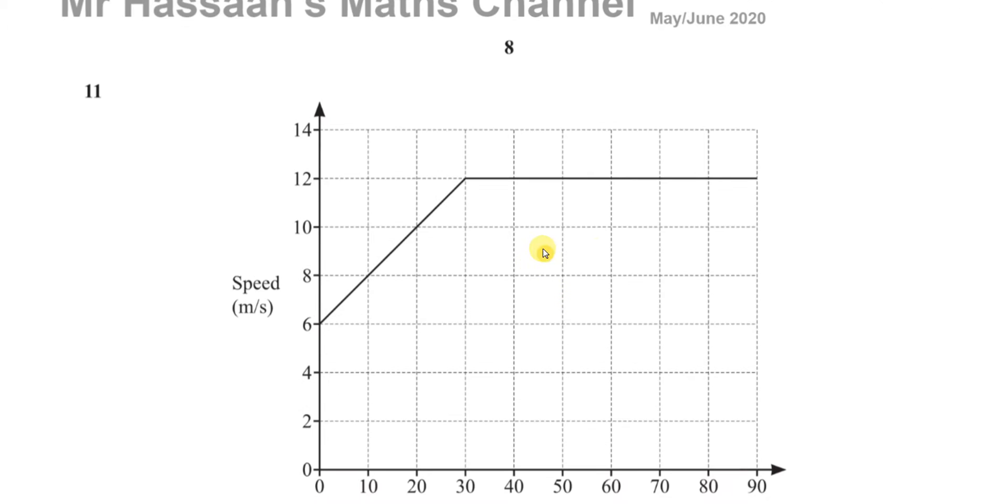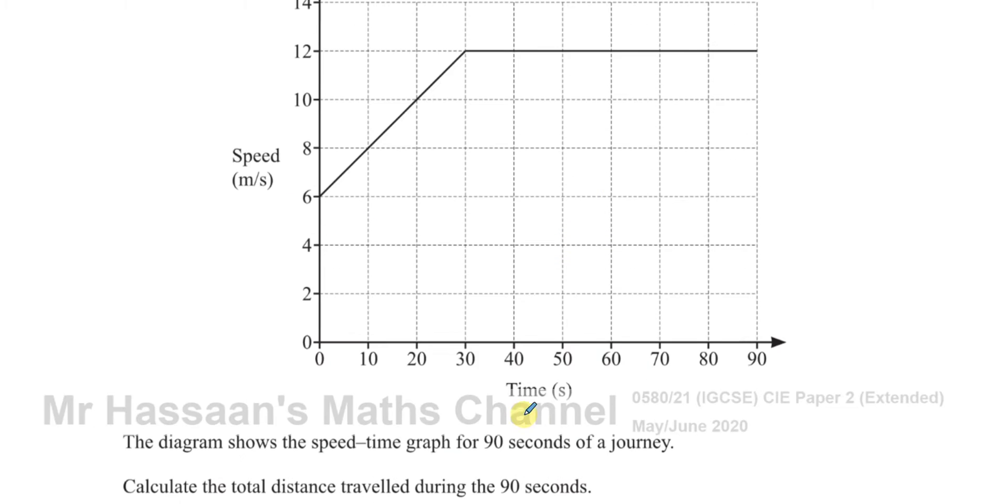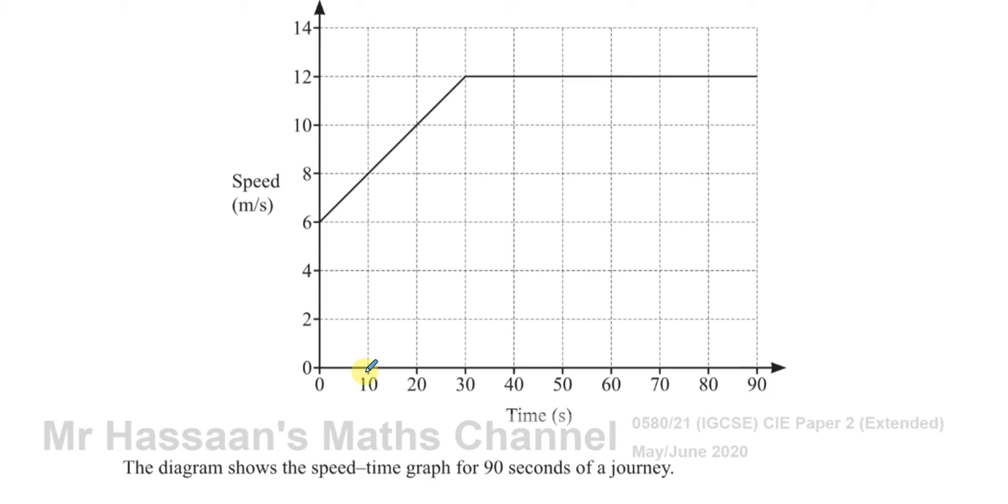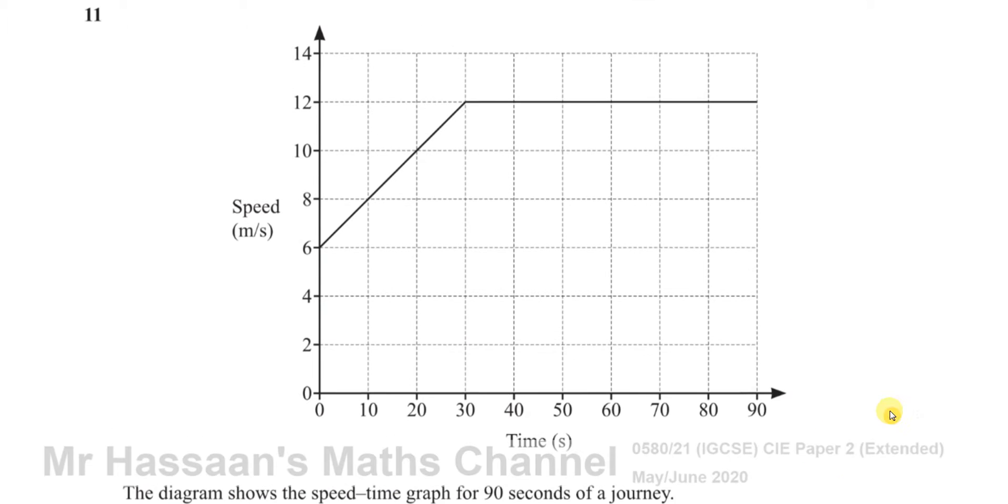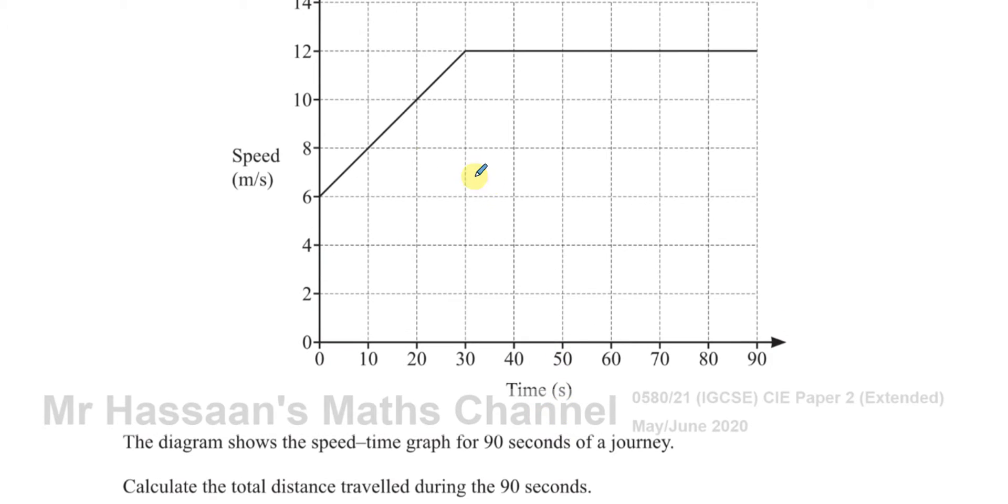This question here is about travel graphs. You have here a speed-time graph. It says the diagram shows the speed-time graph for 90 seconds of a journey. Calculate the total distance traveled during the 90 seconds. Now the first thing you need to check is the units here. This is meters per second, and this is second, so we don't have a problem there. The answer is going to come out in meters directly.